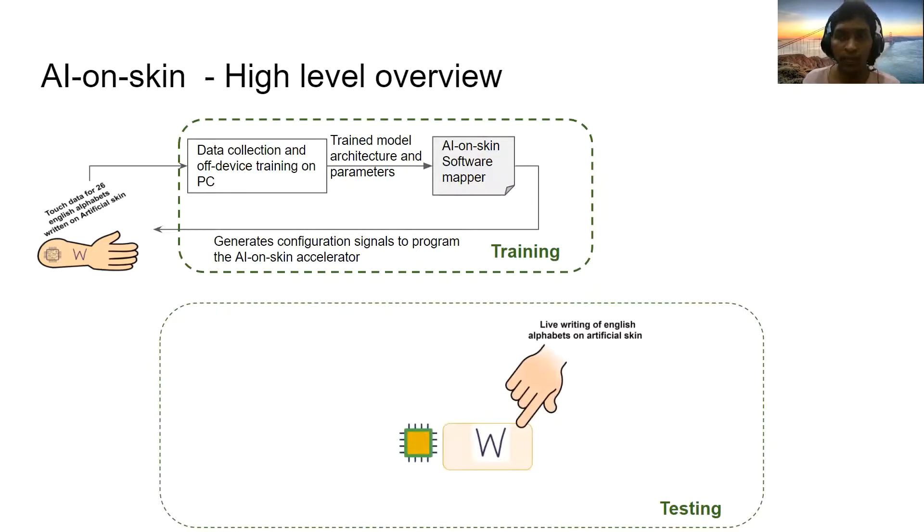During testing, the programmed AI on skin accelerator will be attached to the skin patch and when the user writes an alphabet, the touch data is being sent to the neural network accelerator and the neural network accelerator computes the inference and sends it back.